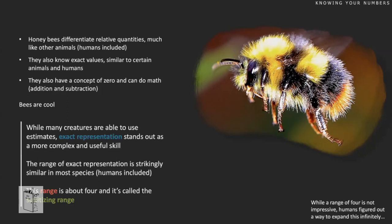The honeybee can also know exact values. When you show them two groups, you can estimate which is more or less, but with exact values you know precisely — if you show them three things, they know exactly it is three things. Humans can do the same, and so can lions and dolphins. Honeybees also have a concept of zero and can even do math — they can add and subtract.